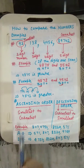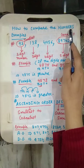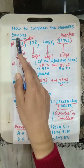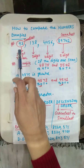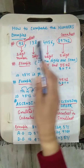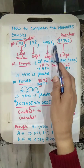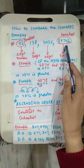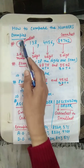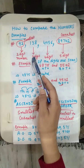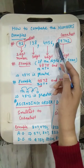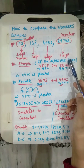So the question is: how do we compare numbers? Here some examples are given — 9, 92, 138, 4456, and 89742. Now, 9 is a 1-digit number, 92 is a 2-digit number, 138 is a 3-digit number, 4456 is a 4-digit number, and 89742 is a 5-digit number.